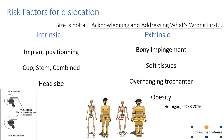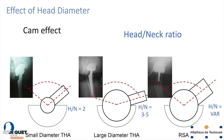Intrinsic factors are related to the surgery itself and what we're doing in the OR. Implant positioning has been shown to be very important regarding the cup positioning, inclination, and anteversion. The combined anteversion is very important as well. Our topic today is head size, which is very important because it allows us to avoid risk of dislocation by two ways.